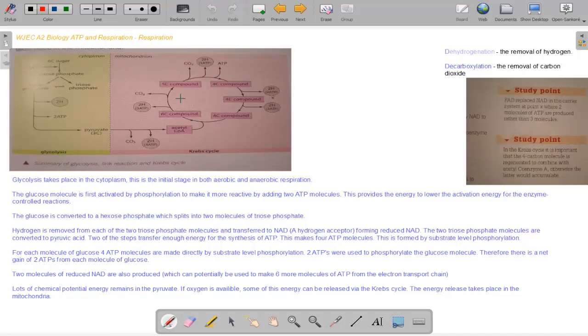So looking at the glycolysis reaction now. It takes place in the cytoplasm. This is the initial stage of both aerobic and anaerobic reactions. The glucose molecule is first activated by phosphorylation to make it more reactive by adding two ATP molecules. This provides the energy to lower the activation energy for the enzyme controlled reactions. The glucose is converted to a hexose phosphate which splits into two molecules of triose phosphate. So summary here: six carbon sugars requires two ATP energy, or 60 kilojoules, to make hexose phosphate, two triose phosphate. And then two hydrogens are made, two ATP are made.